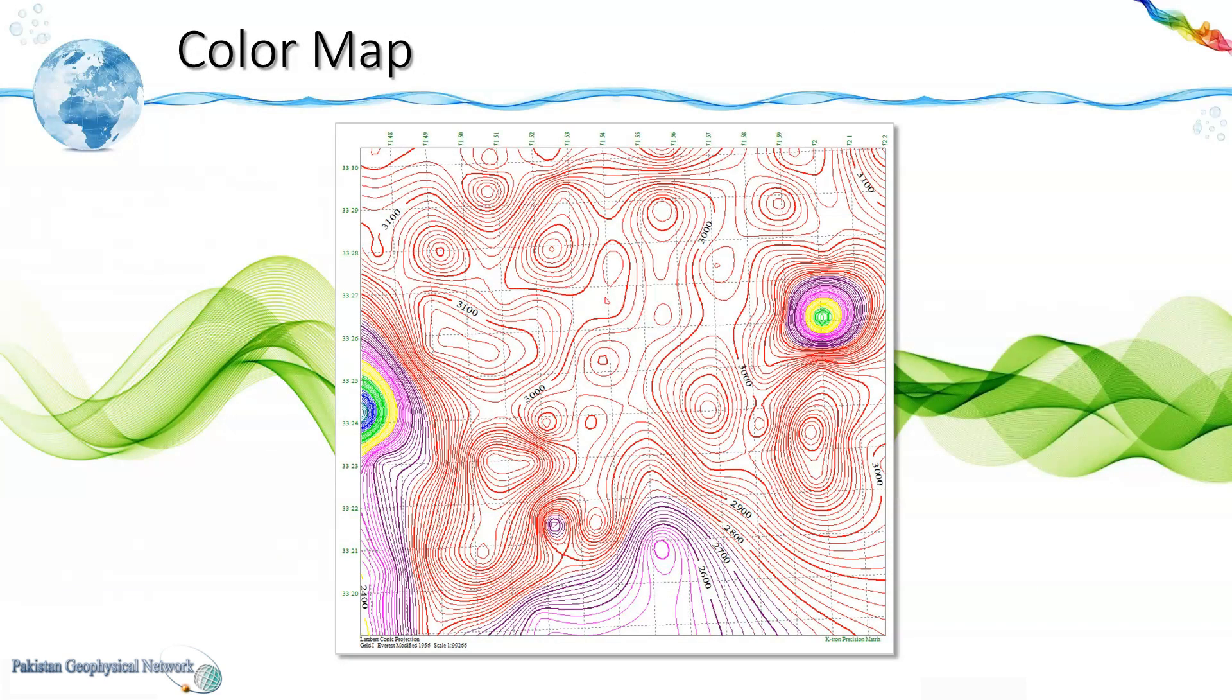These are the contours and as we can see these are equipotential lines which show the trend of the anomaly or the geographic feature.